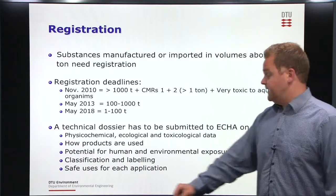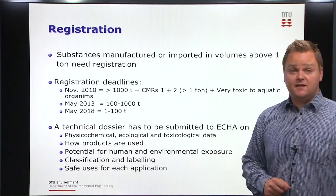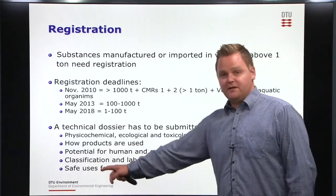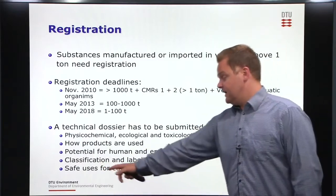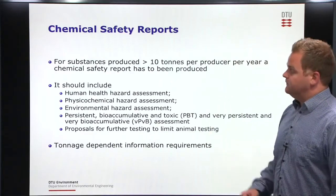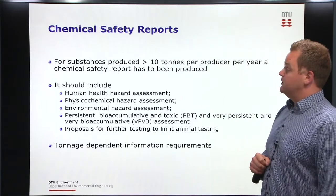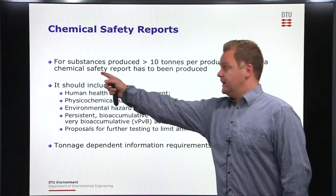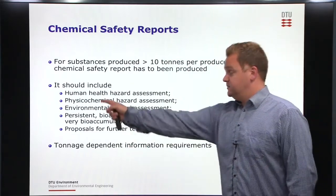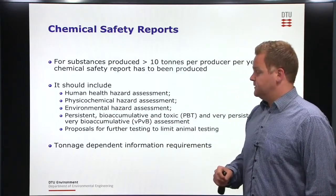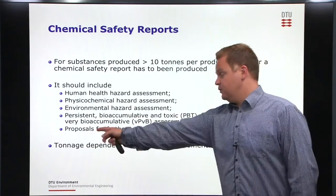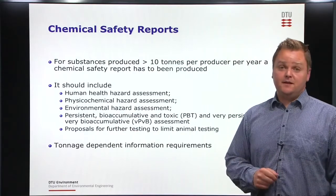The technical dossier needs to provide physicochemical, ecological and toxicological data. It has to provide information on how the products are used, the potential for human and environmental exposure, information about how the chemical is classified and labeled, and information about the safe uses of each application of the chemical. For substances produced in more than 10 tons per producer or imported per year, a chemical safety report has to be submitted as well. This chemical safety report should include a human health hazard assessment, a physicochemical hazard assessment, an environmental hazard assessment, an evaluation of persistency, bioaccumulation and toxicity, and proposals for any further testing.